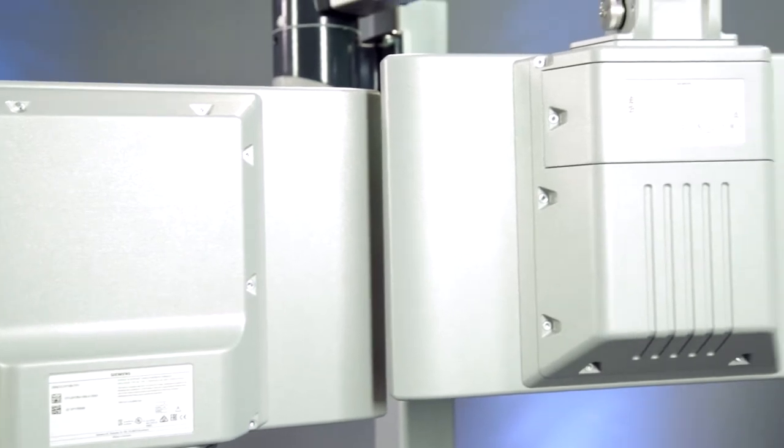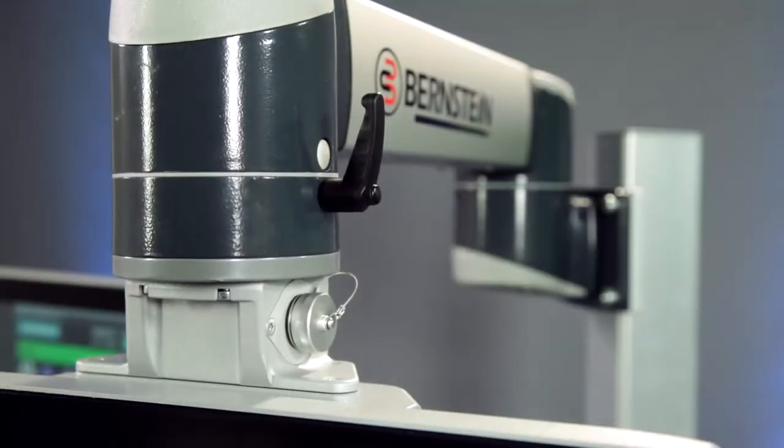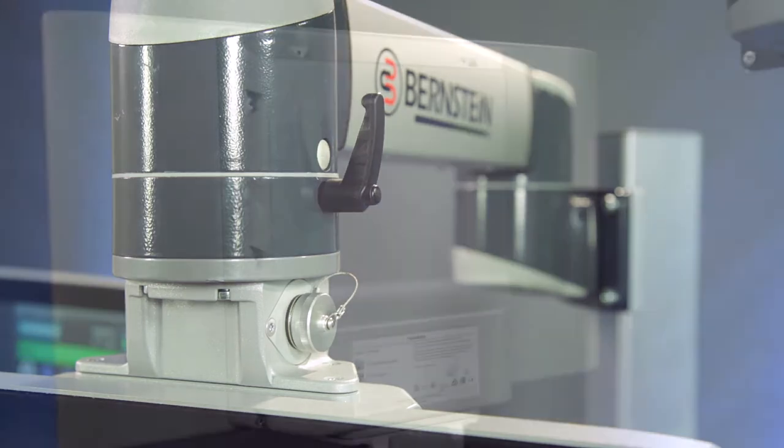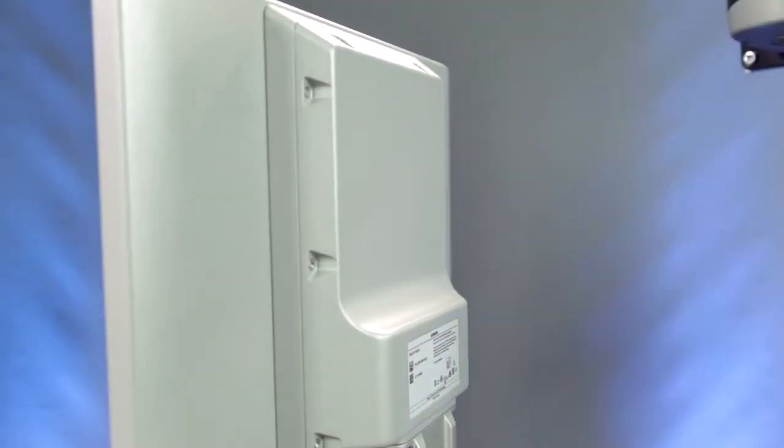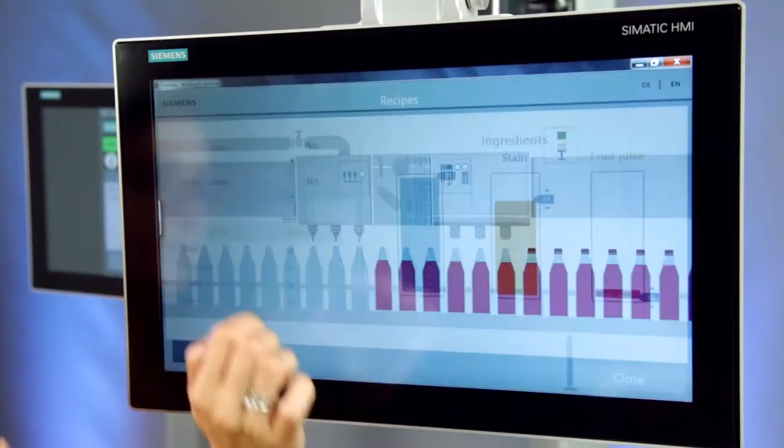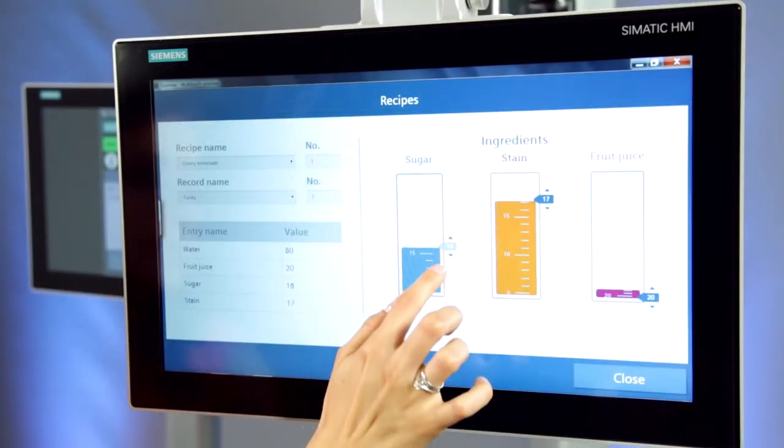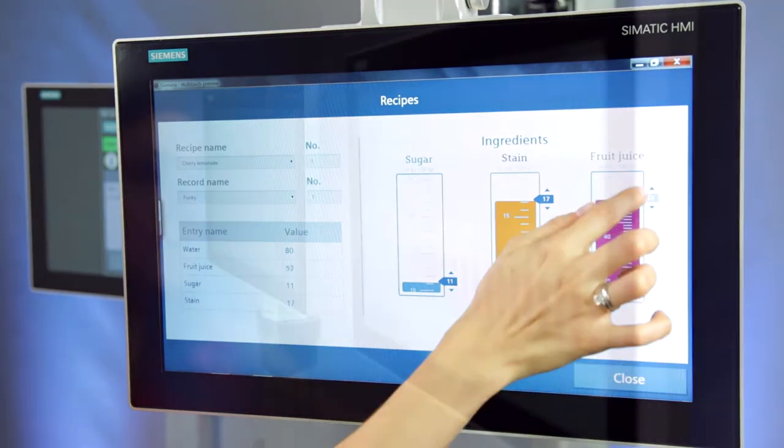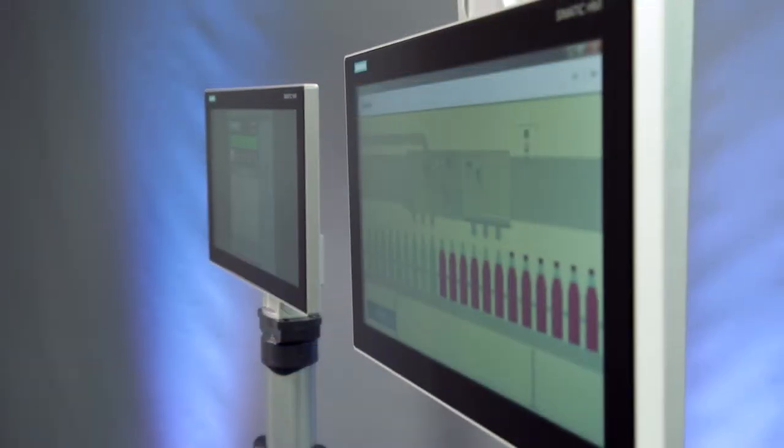How would you like to have an operating device that could be installed outside the control cabinet directly at the machine? A device protected against dust and water jets from all directions, one that could be operated using gestures known from smartphones, and, on top of it all, one that has cool looks?